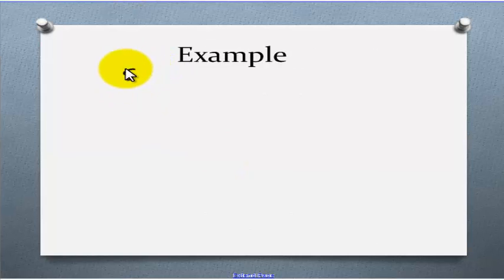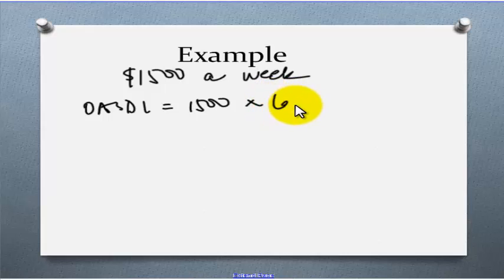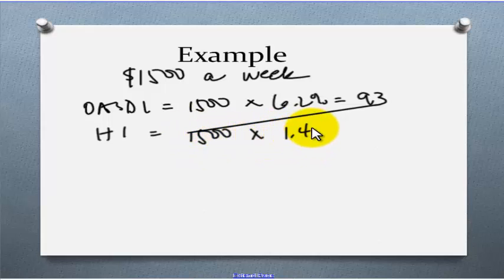Let's look at an example. Let's say we're paid $1,500 a week. We're going to calculate OASDI first. We'll take $1,500, assuming that this person has not met the $113,700 cap. $1,500 times 6.2% is going to be $93. For HI, all the wages are going to be taxable. We multiply that by the 1.45%, and that gives us $21.75.